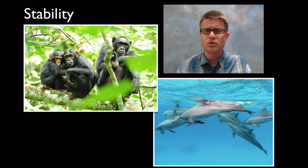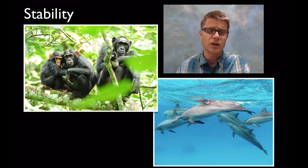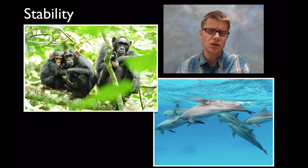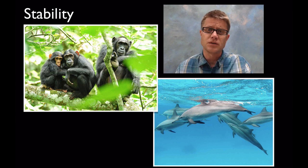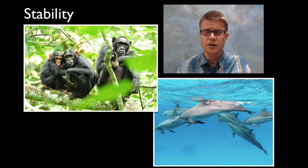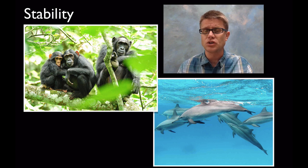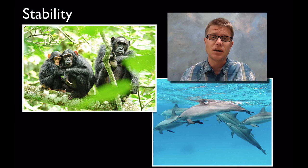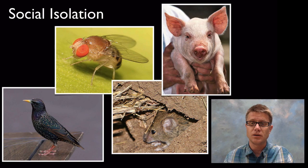These groups show different levels of stability. Chimpanzees will have a highly stable group — their community stays the same year after year. Then some groups like these spinner dolphins show a lot of stability between mother and offspring, but they form fluid, dynamic groups that change over time. And that helps them in their ecosystem.